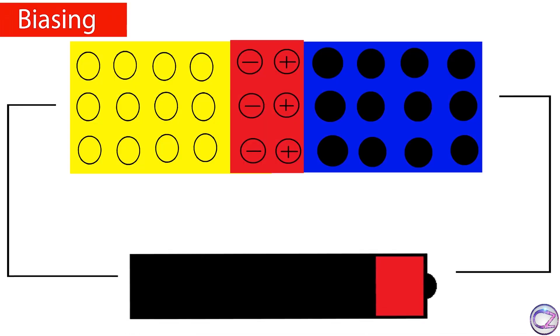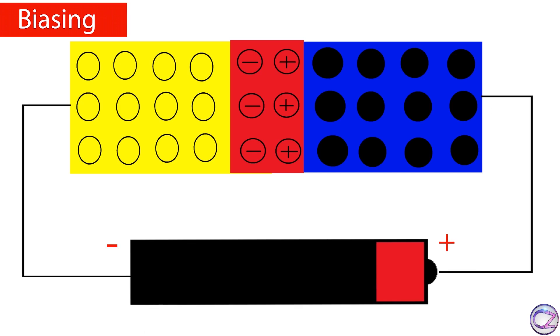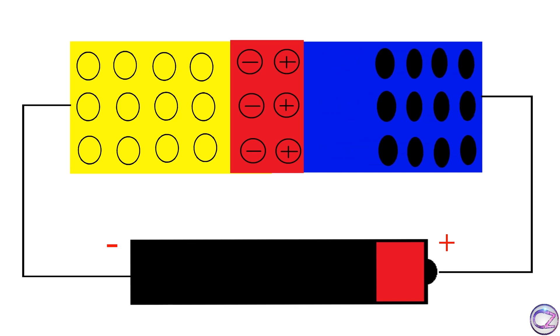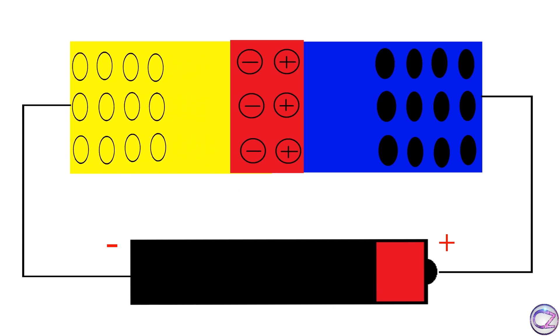Now, if you connect a battery as an external power source with a diode like this, then the positive terminal of the battery attracts the electrons from the N-side and the negative terminal attracts holes from the P-side.